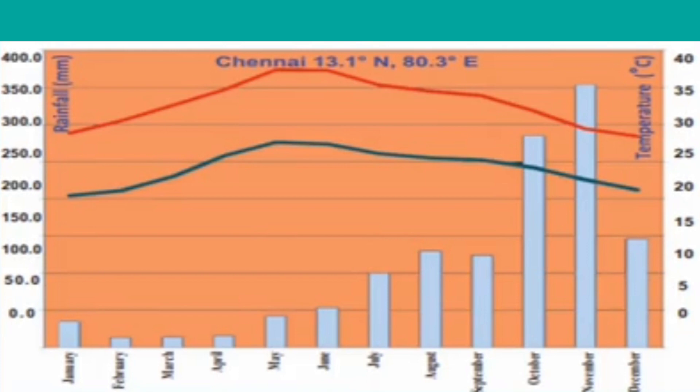Now let us see the Chennai climatograph. The X-axis indicates months from January to December, and the Y-axis indicates rainfall. Chennai is located in a coastal area. Maximum temperature ranges from 38 degrees to 28 degrees Celsius. Minimum temperature ranges from 20 degrees Celsius to 25 degrees Celsius. November has the most rainfall at 350 millimetres. February has the lowest rainfall at 2 mm. Chennai receives the highest rainfall because of the retreating monsoons.